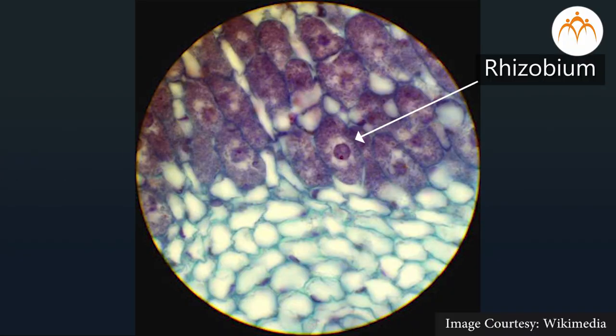Observation: The bacteria present in the root nodule are rhizobium. They appear pink in the slide as they are stained with safranin. These bacteria are rod-like, that is, bacilli. These bacteria are able to move in soil and hence can enter the roots of leguminous plants from the soil.